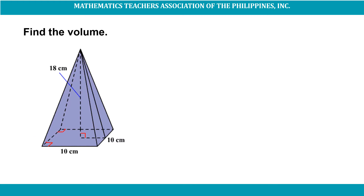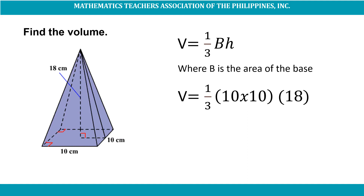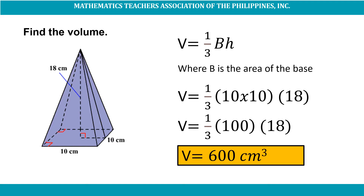How about finding the volume of a pyramid? This pyramid has a height of 18 centimeters. Its base is 10 centimeters long and 10 centimeters wide. The formula in finding the volume of a pyramid is V = (1/3)Bh, where B is the area of the base. Substituting: V = (1/3) × (10 × 10) × 18 = (1/3) × 100 × 18. The volume of this pyramid is 600 cubic centimeters.